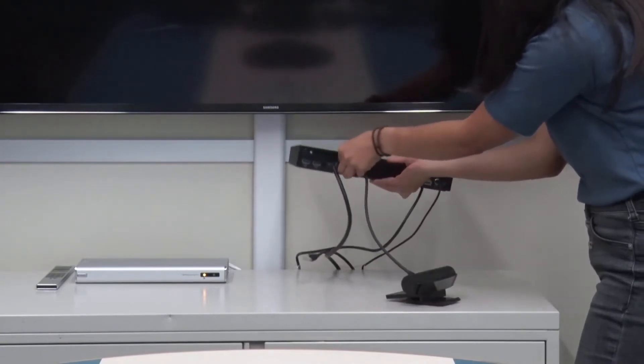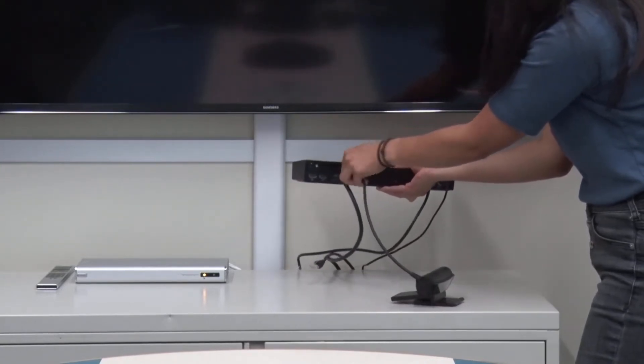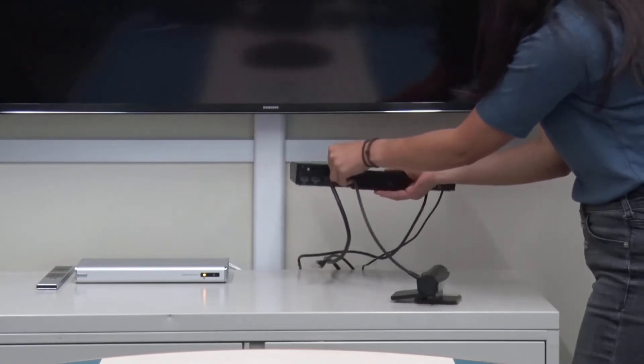You will see three ports on the back of the hub. Plug this cable into the port on the right with the camera icon.